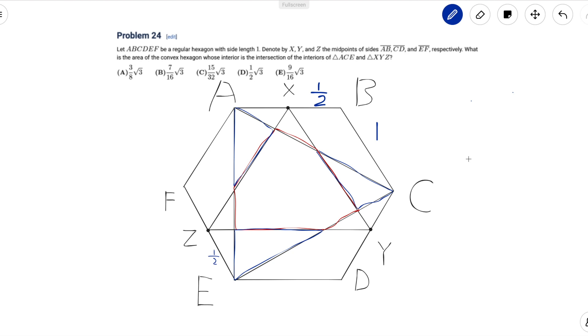The problem reads, let ABCDEF be a regular hexagon with side length 1. Denote by x, y, and z the midpoints of sides AB, CD, and EF respectively. What is the area of the convex hexagon whose interior is the intersection of the interiors of triangles ACE and XYZ.